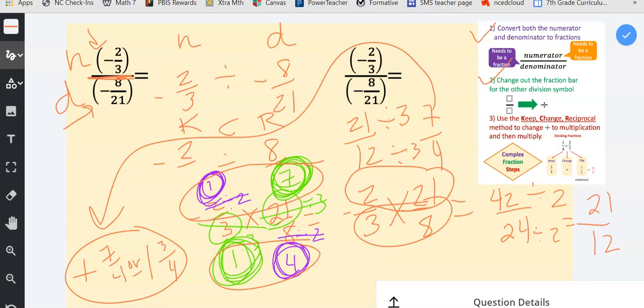I can either reduce first and then multiply the numerators and the denominators, or I can multiply the numerators and denominators and then simplify to get that seven-fourths.